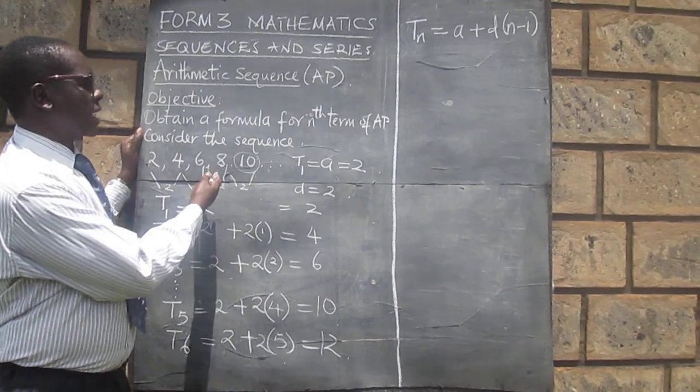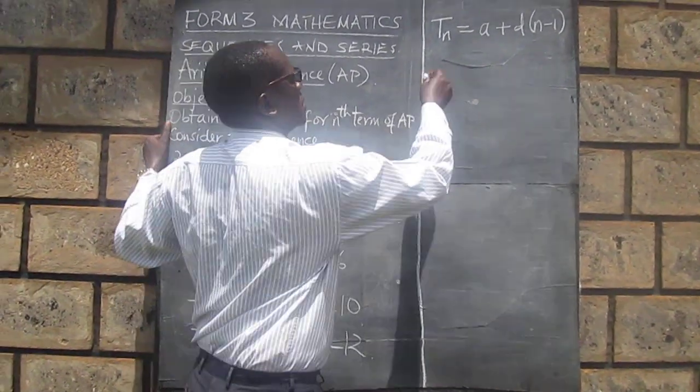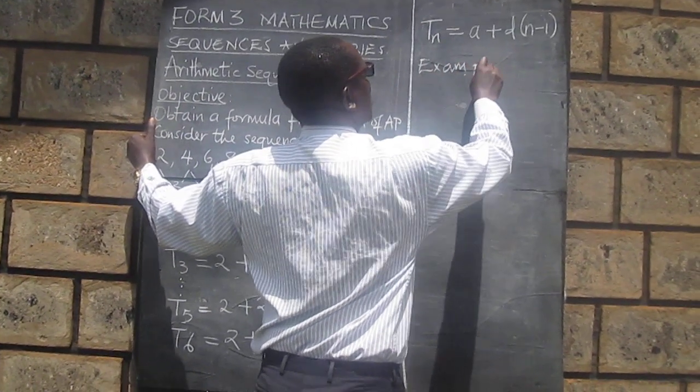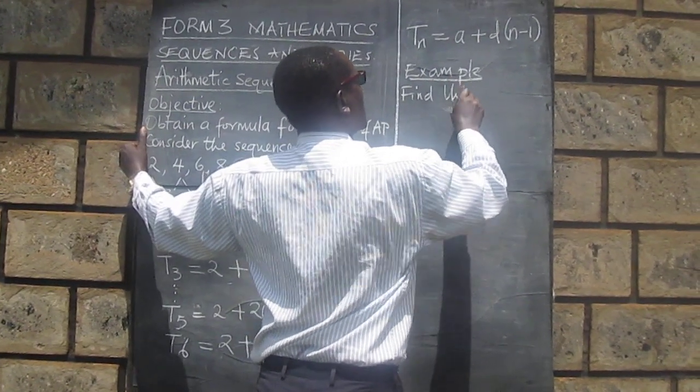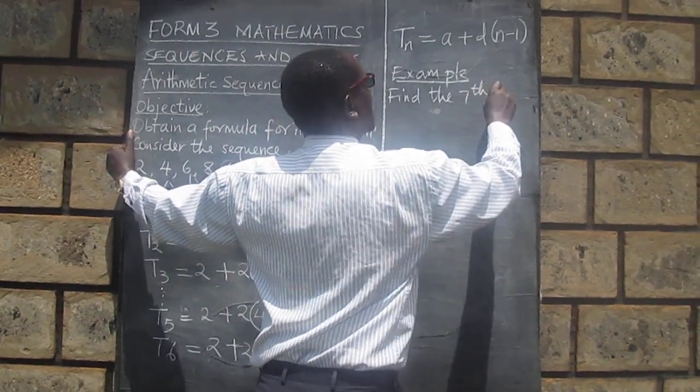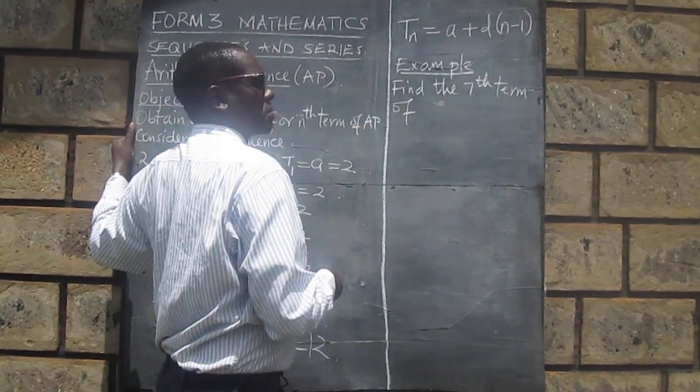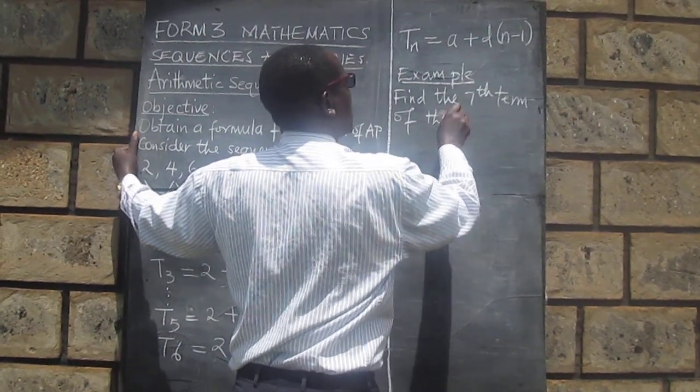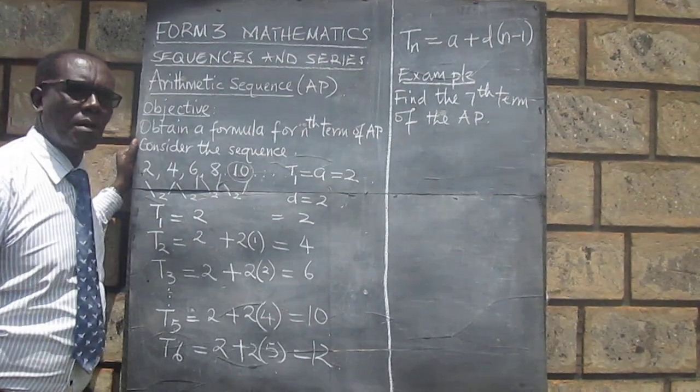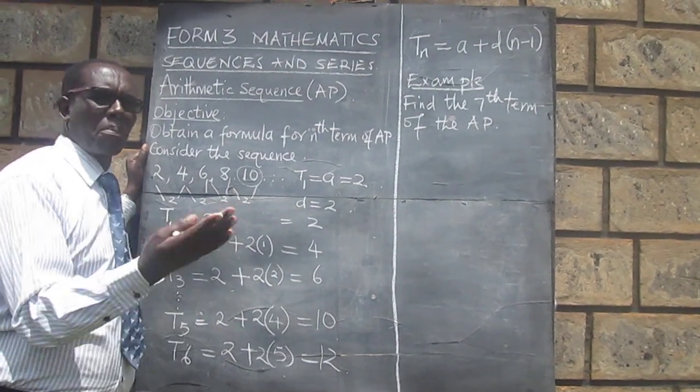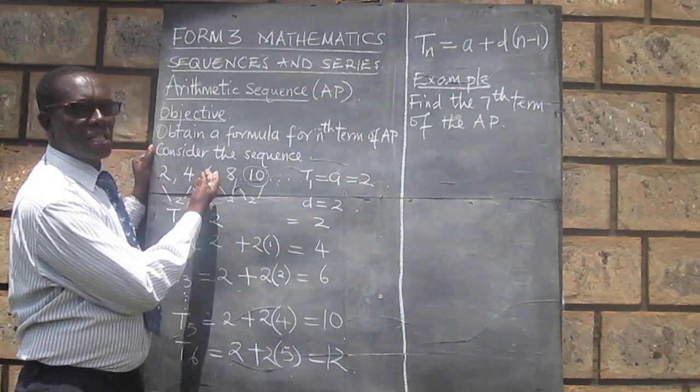We can maybe start by getting a term which is very close here. Let's get the seventh term. We want to get the seventh term. Find the seventh term of the sequence of the AP. Sometimes we call it the arithmetic progression. You can use the word sequence or progression. Sequence, you know, generally means order. These terms are in a particular order.